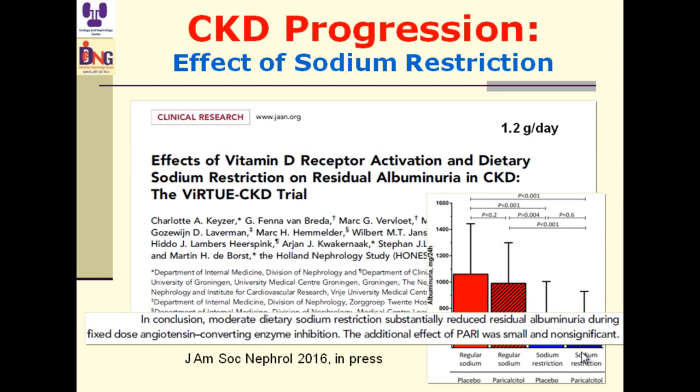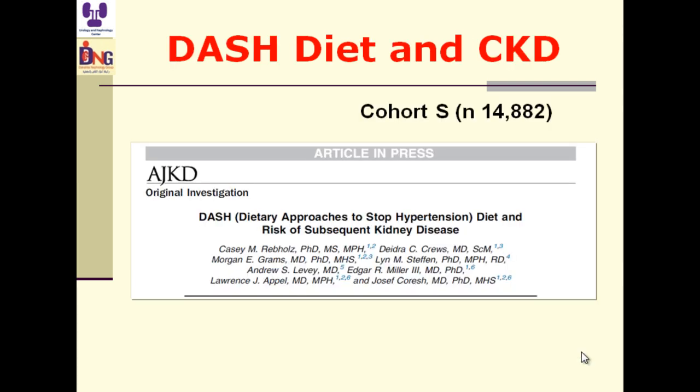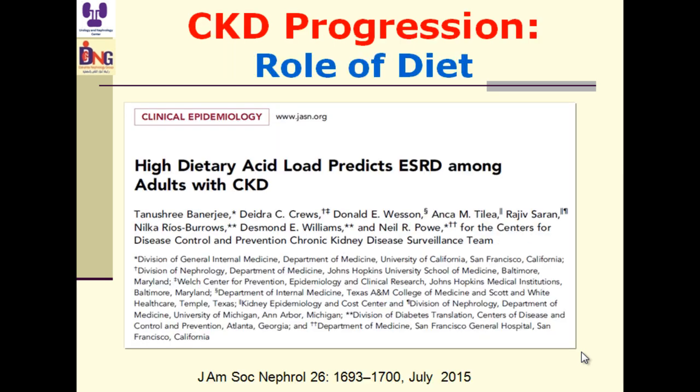The DASH diet — Dietary Approaches to Stop Hypertension — means low calories, low salt, and high fruits and vegetables. If started early, DASH diet may help in retarding CKD progression. In late CKD we are afraid of hyperkalemia, so starting early is preferable. Dietary acid load is associated with high protein intake because protein generates acid, while fruits and vegetables have a negative acid load. The higher the protein, the higher the dietary acid load, and the higher the risk for CKD progression in adults.